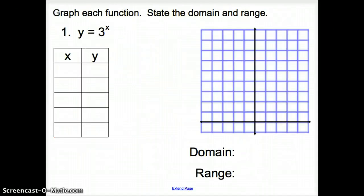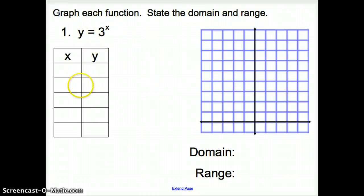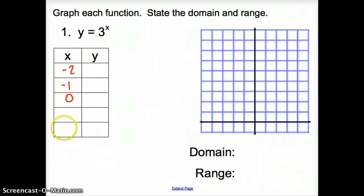Let's jump into some graphing, and we're also going to be asked to state the domain and range. The first thing we want to do is recognize that x is an exponent. When we have that exponent, we want the middle value of our table to be 0. So I'm going to start with 0 in the middle, then go 2 below — negative 2 and negative 1 — and then 2 above for 1 and 2.